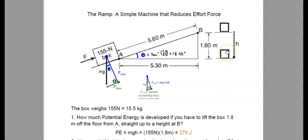So no matter which way you go, whether you go from A up to B along the diagonal or from the floor level of A straight up to B, you will be spending 279 joules of work.